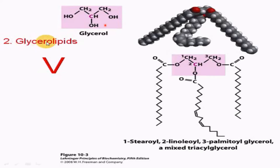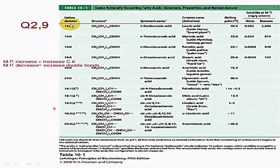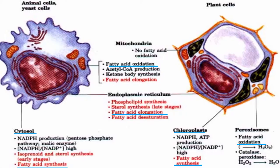Fatty acids are bound to a 3-carbon glycerol molecule to produce a glycerol lipid. This table represents the relationship between carbon atoms and melting point: as the number of carbon atoms increases, the melting point of the fatty acid also increases, but whenever the number of double bonds increases, the melting point decreases.